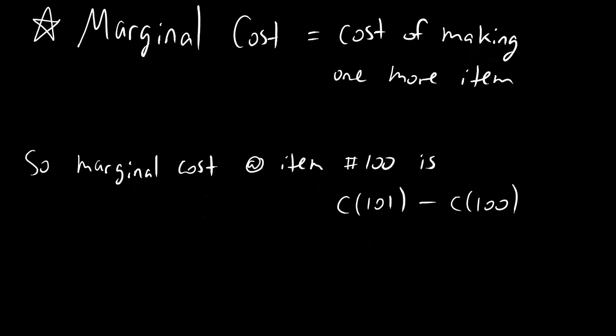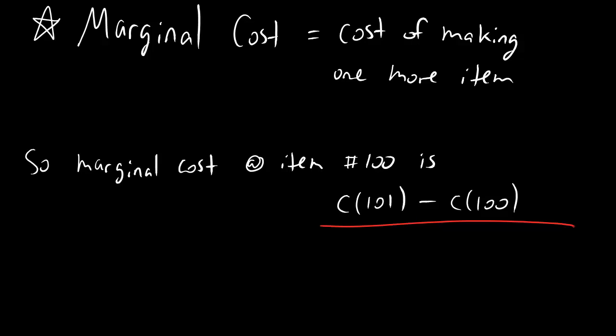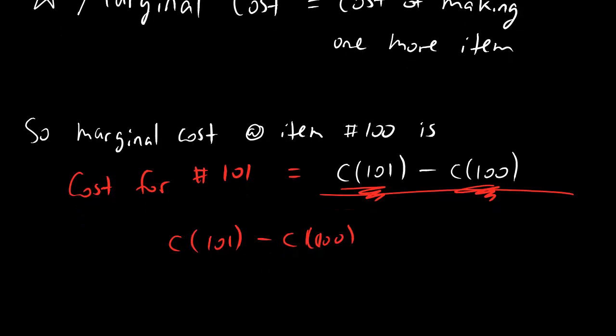But the general formula for marginal cost is just this, because it's how much money it takes to make the one extra item. So we take how much it costs to make the 101st item, and we subtract how much it already costs to make the first 100. And this is how much it costs to make just item number 101. What you might notice about this is that we've got C of 101 minus C of 100. And that's the same thing as dividing by 101 minus 100, because 101 minus 100 is just the number 1. So these are the same things.